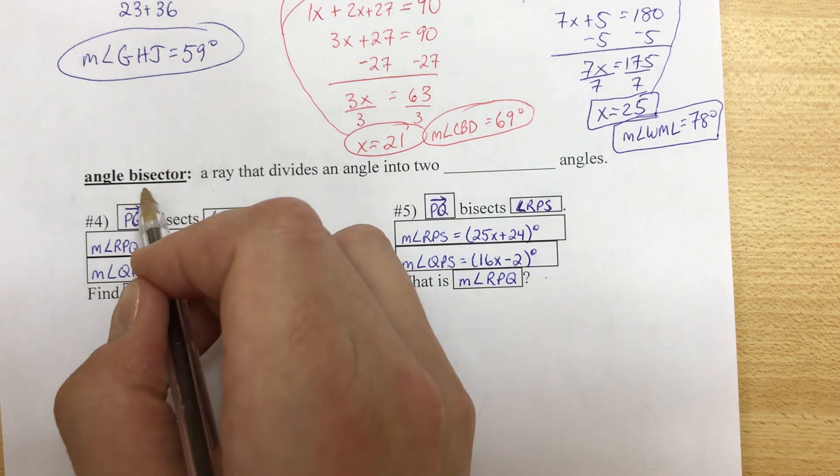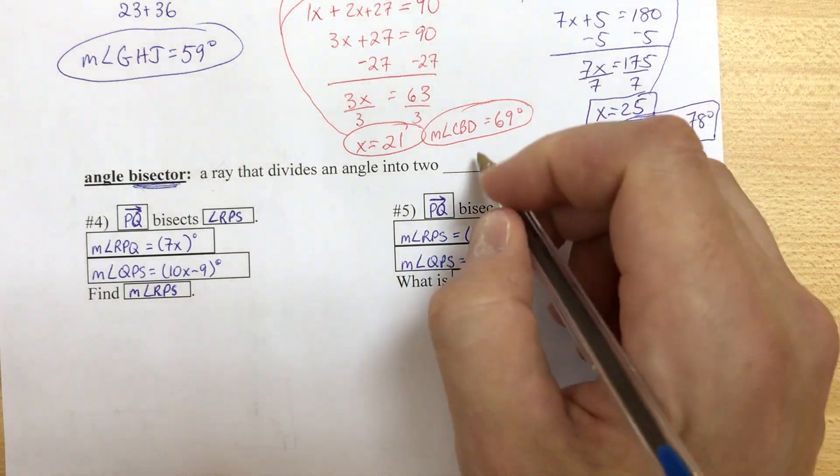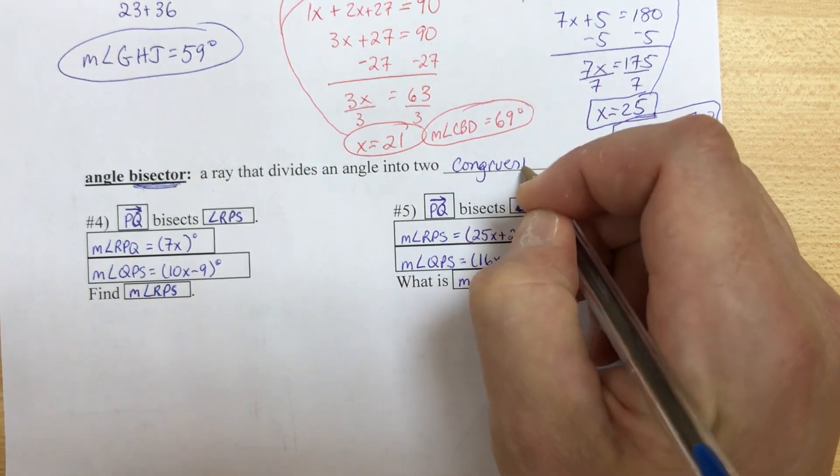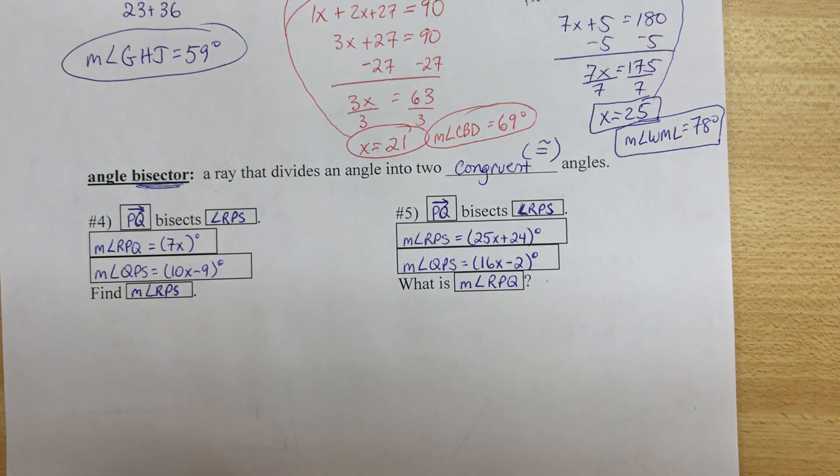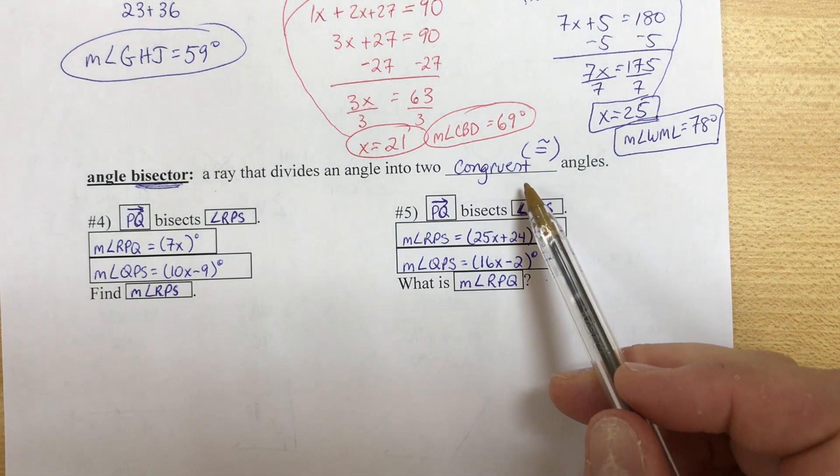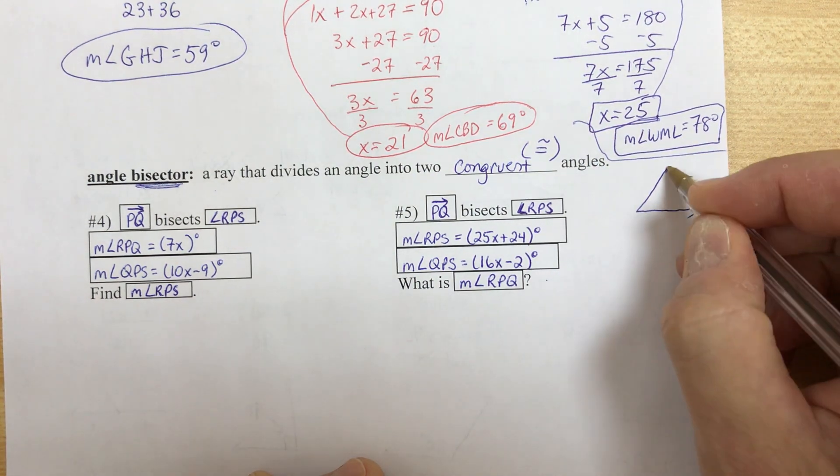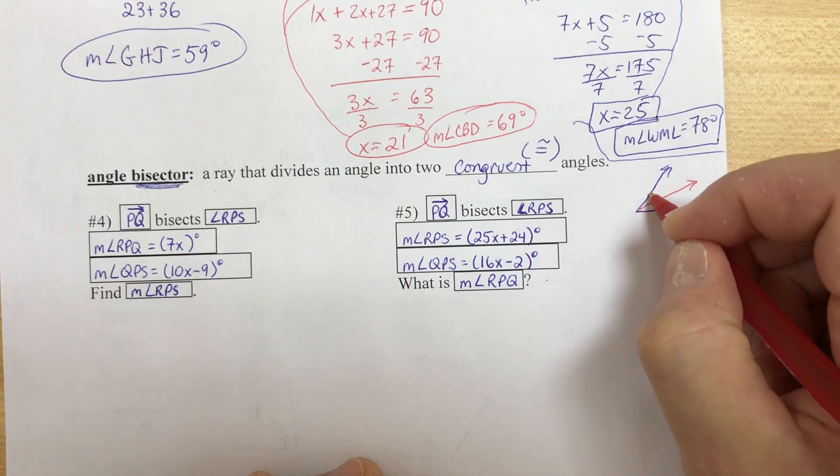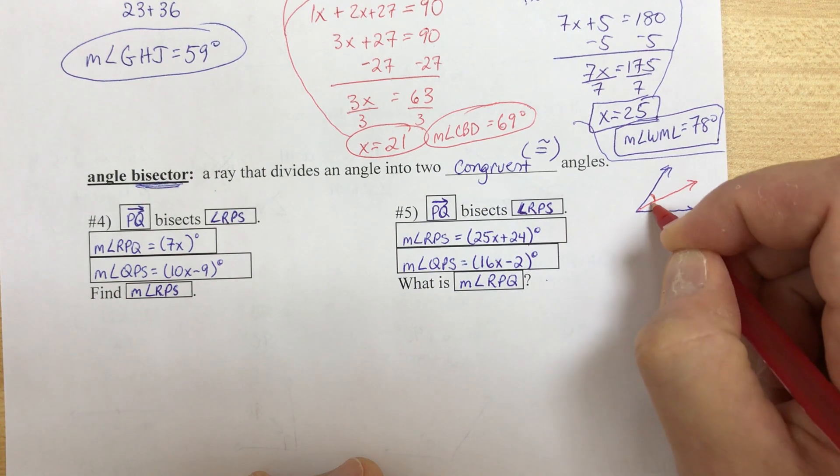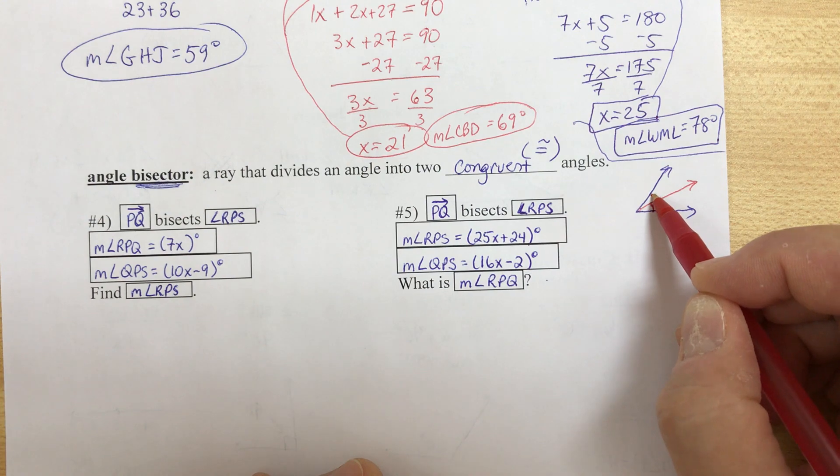An angle bisector. Bisector, we've already talked about that word. That means cut in half. It's a ray that divides an angle into two congruent angles. The symbol for congruent is that equal sign with a little wave over it. That means they're the same shape, same size. Basically, they're equal. Now on the side here, if you bisect an angle, so that means we cut it in half. What it means is that this small angle and this small angle will be the same. If the two angles are congruent, then what we do is we draw these arcs, the same number of arcs. That means that they are congruent to each other.